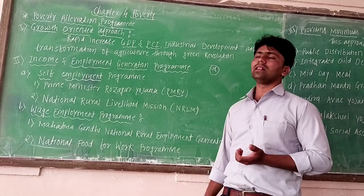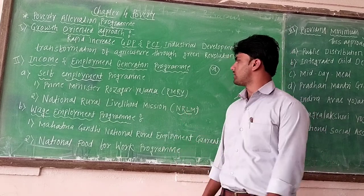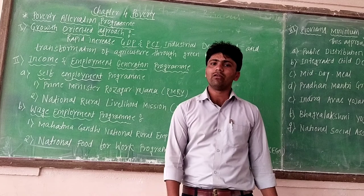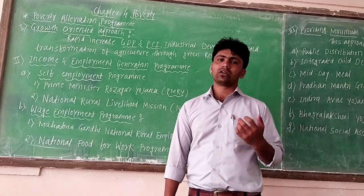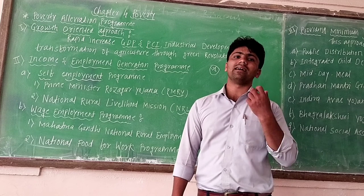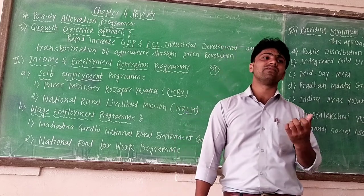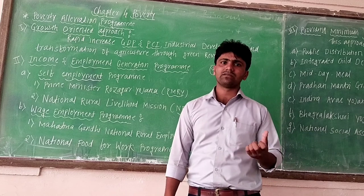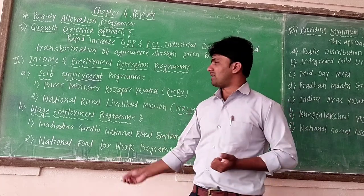The second scheme is the National Rural Livelihood Mission. The main aim is that poor people can earn enough to meet at least the three basic necessities: food, clothing, and shelter. That much support has to be provided to people living below the poverty line.